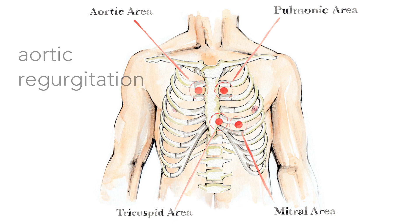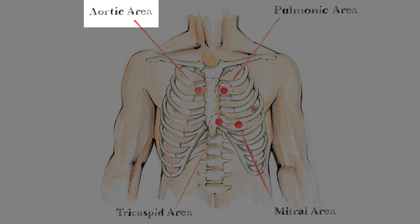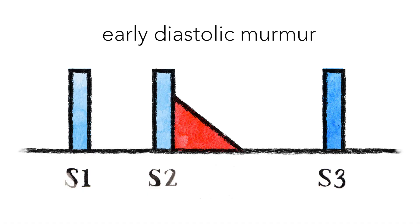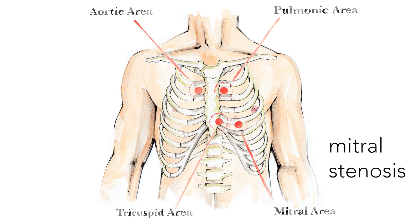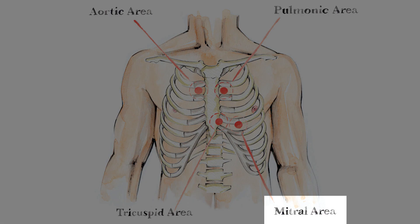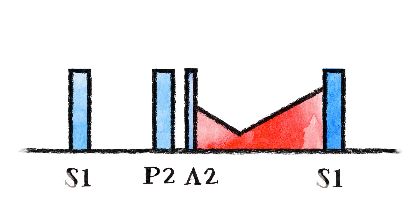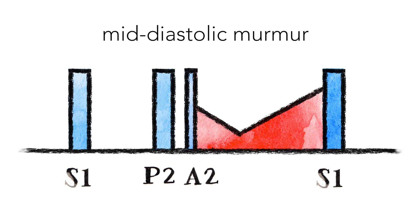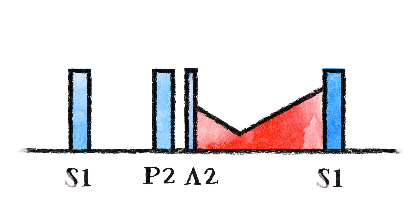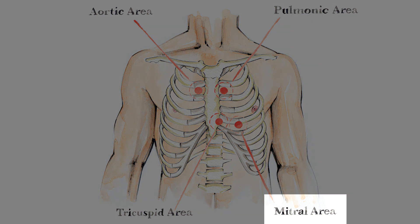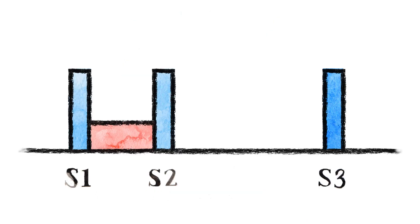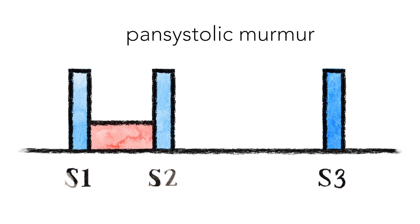Aortic regurgitation is best heard at the lower left sternal edge. It is an early diastolic murmur associated with a collapsing pulse. Mitral stenosis is best heard in the mitral area in the fifth intercostal space at the midclavicular line — it is a rumbling mid-diastolic murmur associated with a tapping apex beat. Mitral regurgitation is also best heard in the mitral area and is a pansystolic murmur that radiates to the axilla.